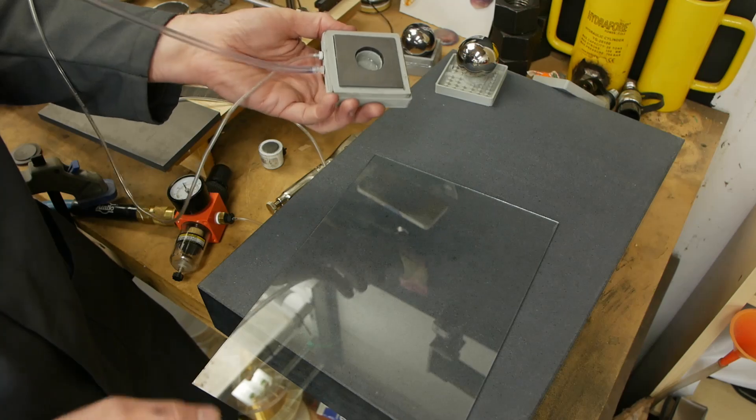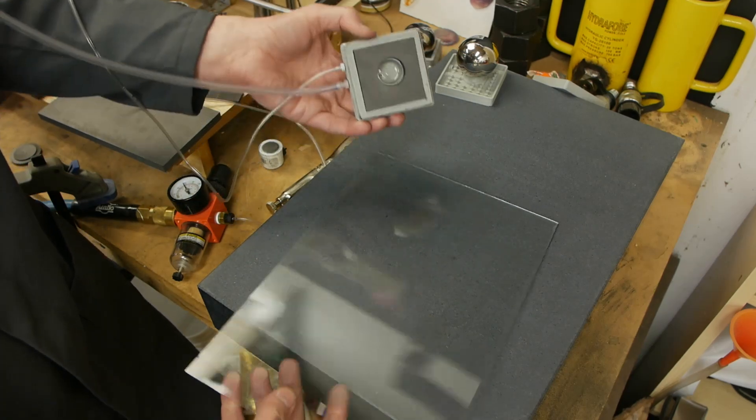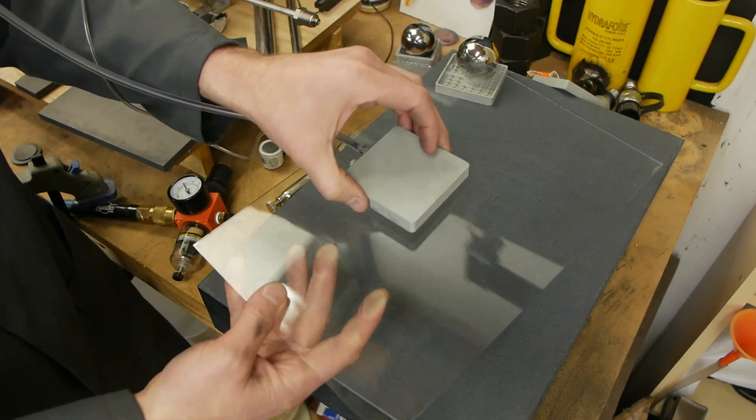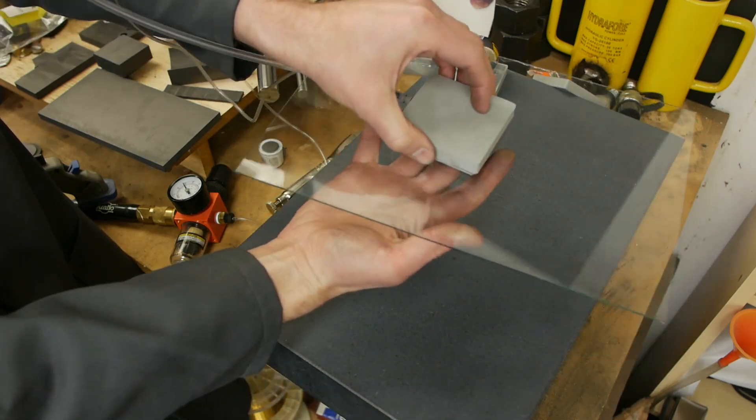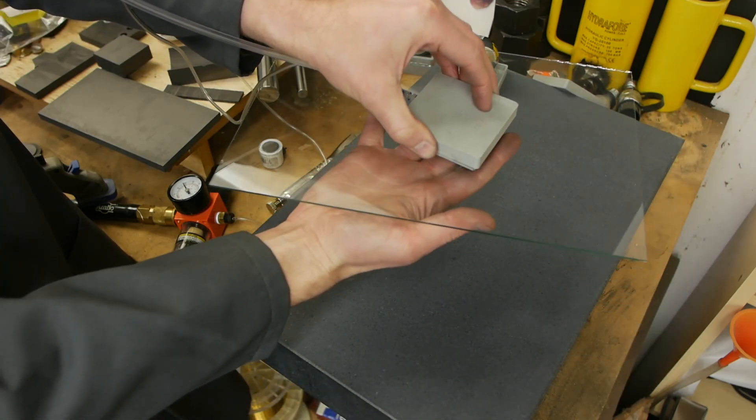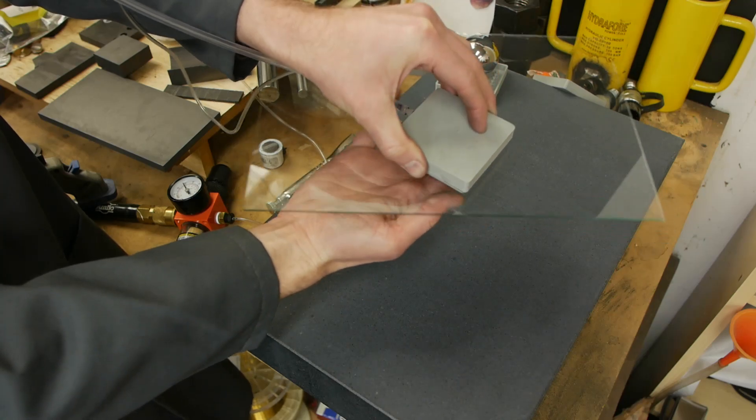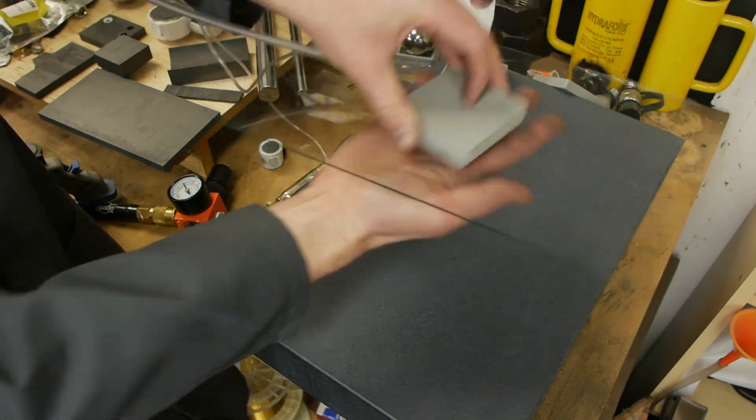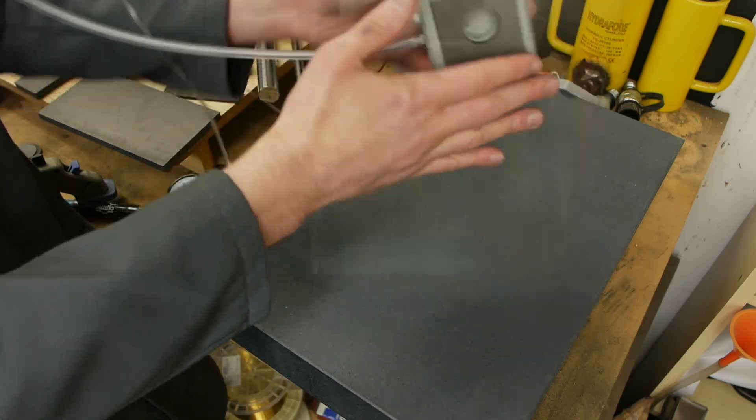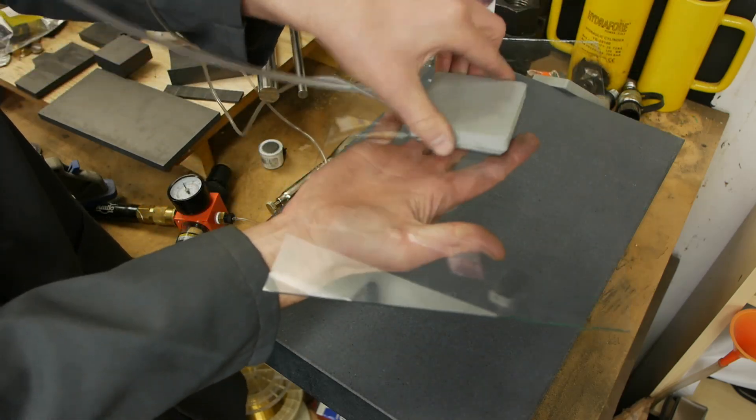I'll show you this flat captive air bearing in action, it's actually really kind of fun to play with. Now it's locked on to the piece of glass and if I can hold it perfectly level it will stay there sort of.